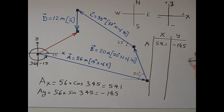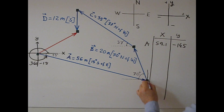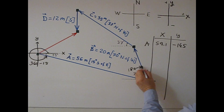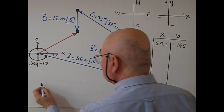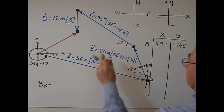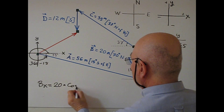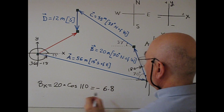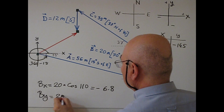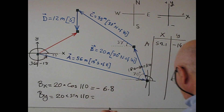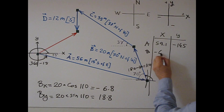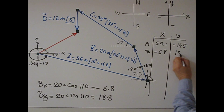For vector B, I bring the x-y coordinate. The angle from the positive x-axis is basically 180 minus 70, which is 110 degrees. So Bx equals 20 times cosine 110, which gives negative 6.8. And By equals 20 times sine 110, which gives 18.8. So for B: negative 6.8 and 18.8.